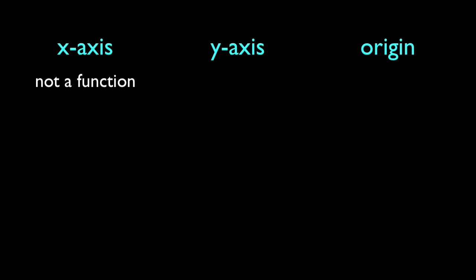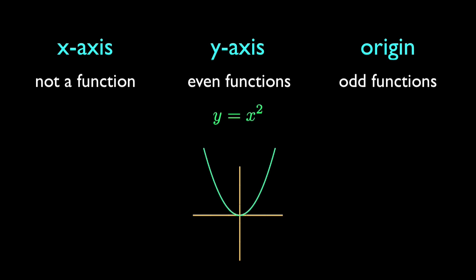Functions with y-axis symmetry are called even functions. Here's an example. Notice the exponent on x is even or odd. This exponent rule isn't enough to find every even or odd function, but it's where they get their names.